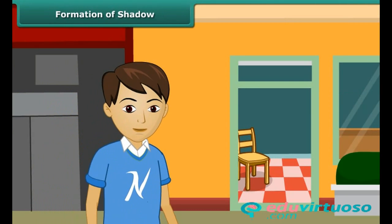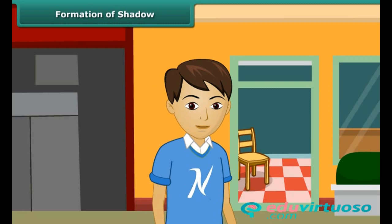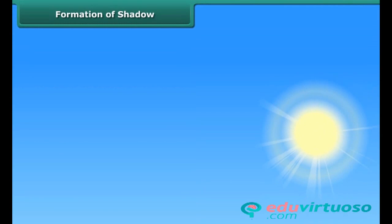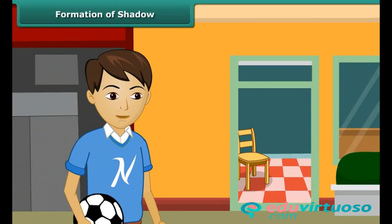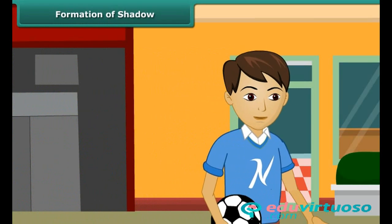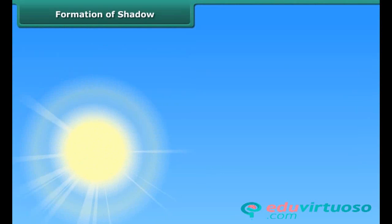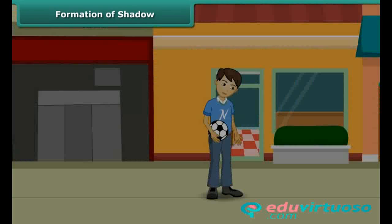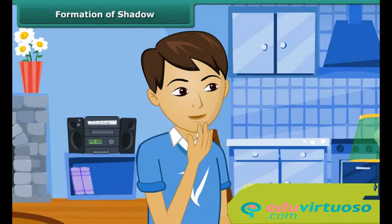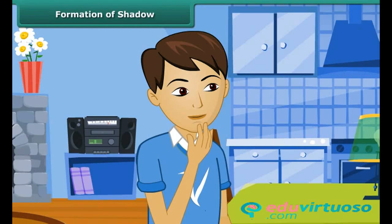On a Sunday morning, you are on your way to the market to buy some milk. The sun is shining bright on your face and you see your shadow on the ground behind you. The same day in the evening, you are out in the park playing football. The sun's rays fall on your back and you see your shadow on the ground in front of you. After a while, the sun sets and there are no more shadows. You want to understand when and in which direction shadows are formed.